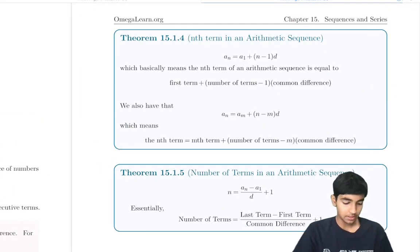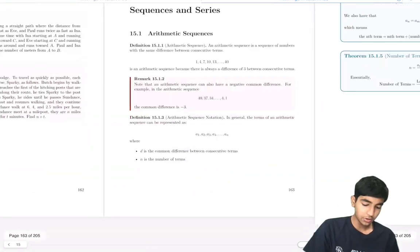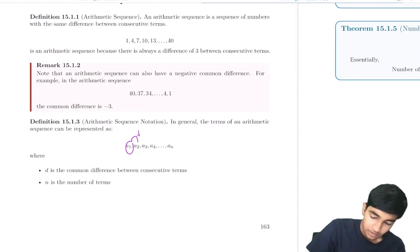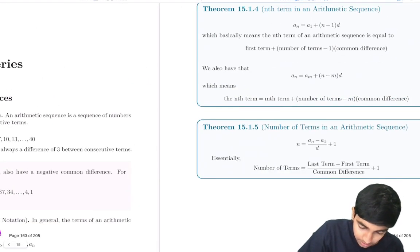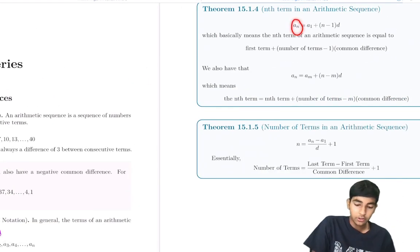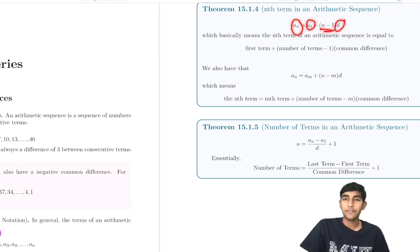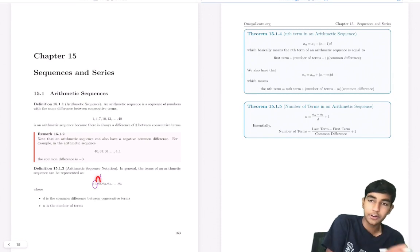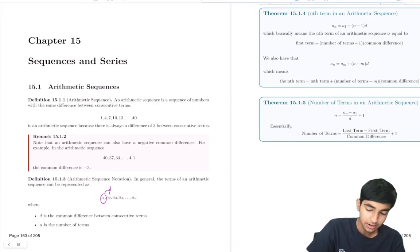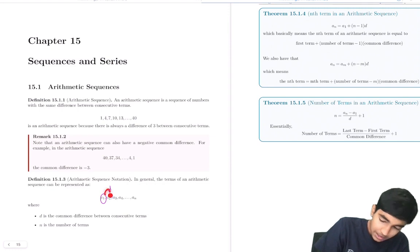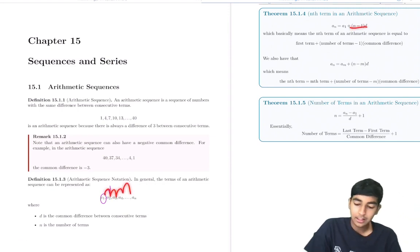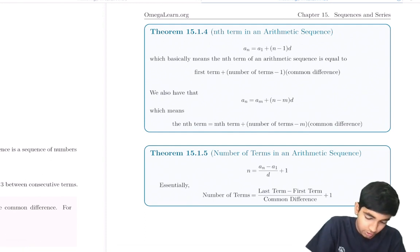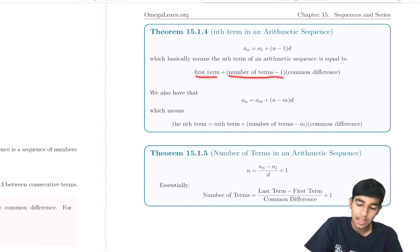The nth term of an arithmetic sequence — there's a cool little trick you can use. If you know the first term and the common difference, the nth term is just the first term plus (n minus 1) times the common difference. This intuitively should make sense, because each time you go from one term to the next, you add the common difference d. So you do that n minus 1 times, adding it to the first term.